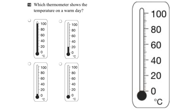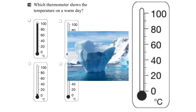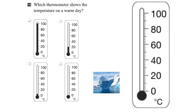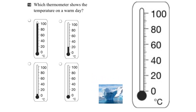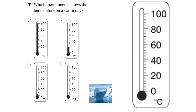At 0 Celsius, water freezes, so let's bring in something that represents water freezing. Here we have a little iceberg — we can shrink it down and bring it to the bottom. We can consider this to be cold. So water freezing, we can call it cold, and that would be right at 0 on the thermometer.